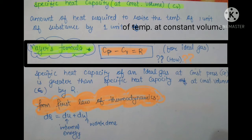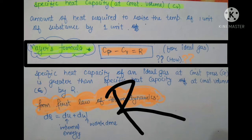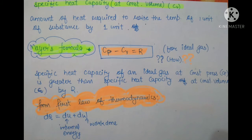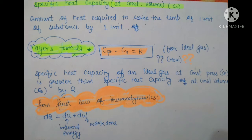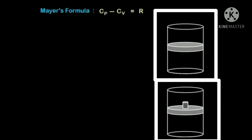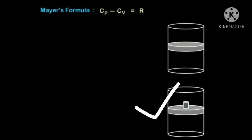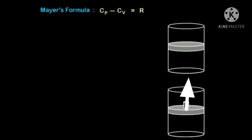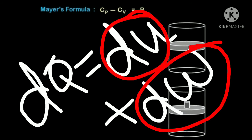Mayer's formula gives the relation between the two specific heat capacities — Cp and Cv — and shows that their difference equals R, the gas constant. Let's understand why Cp and Cv are different. Consider two systems: one at constant pressure and one at constant volume. When we provide heat to a system, it is utilized in two ways: raising the internal energy and doing work.